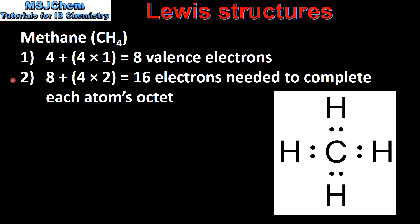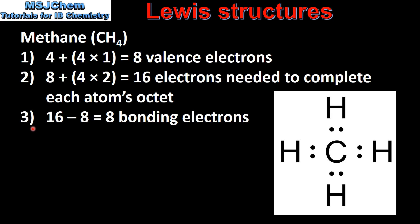In step 2 we determine how many electrons are needed for each atom to complete its octet. Carbon needs 8, while each hydrogen only needs 2. So that's 8 plus 4 times 2, which gives us 16 electrons needed to complete each atom's octet. In step 3 we subtract step 1 from step 2 — that's 16 minus 8 — to give us 8 bonding electrons in the molecule.